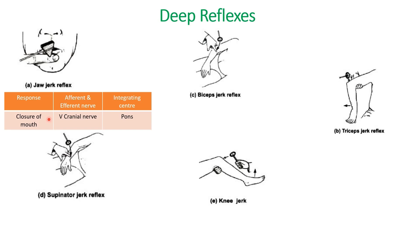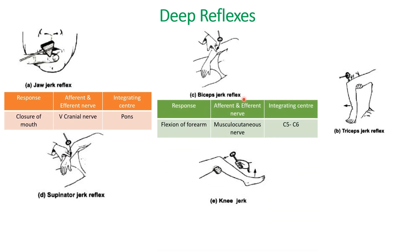The next one is the bicep jerk reflex. We'll strike the bicep tendon — as shown in the diagram — with a reflex hammer. The response is flexion of the forearm, or in simple terms, bending of the forearm.